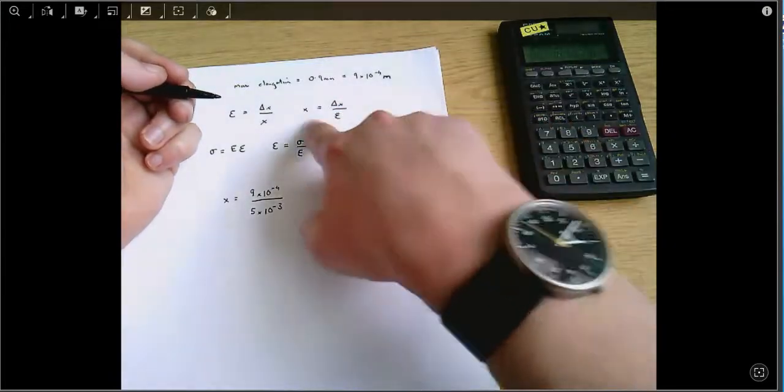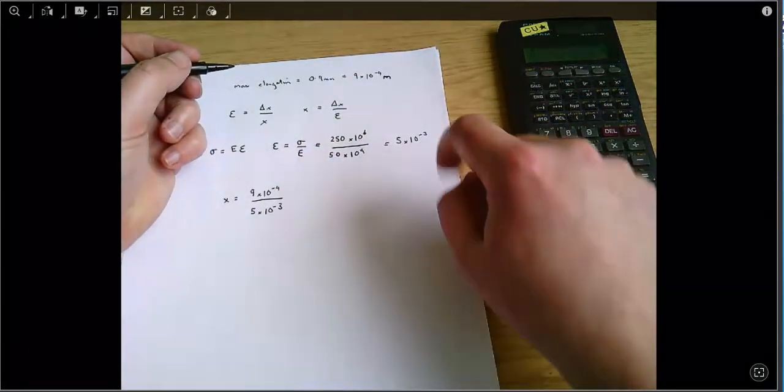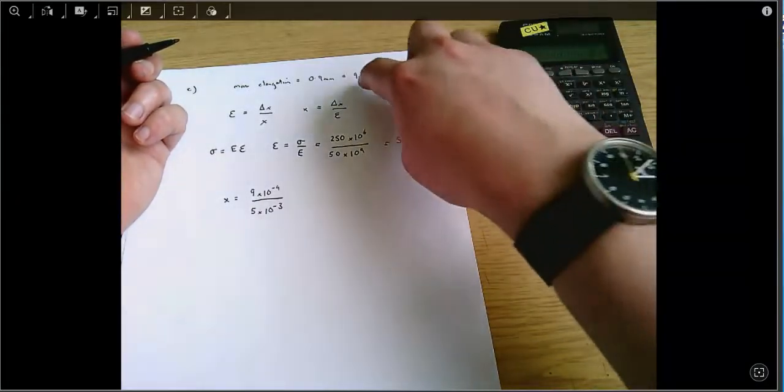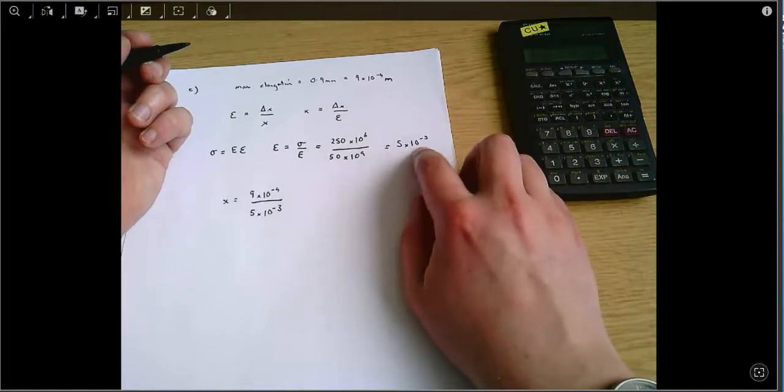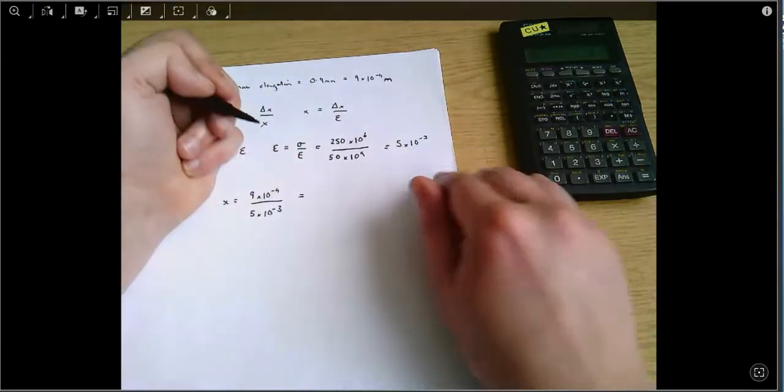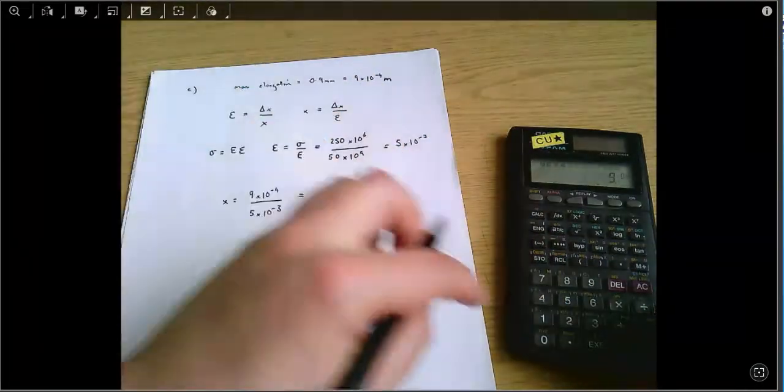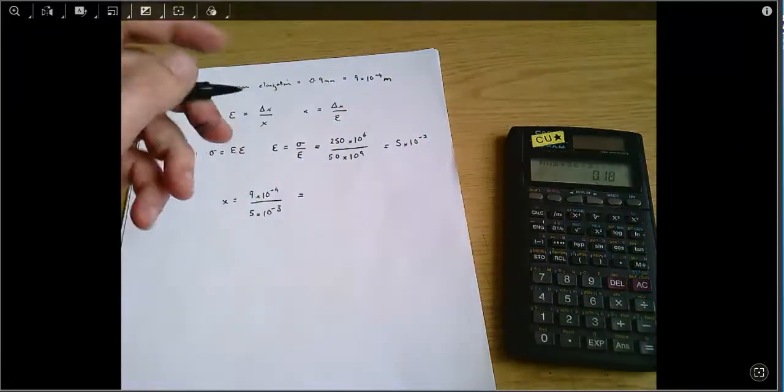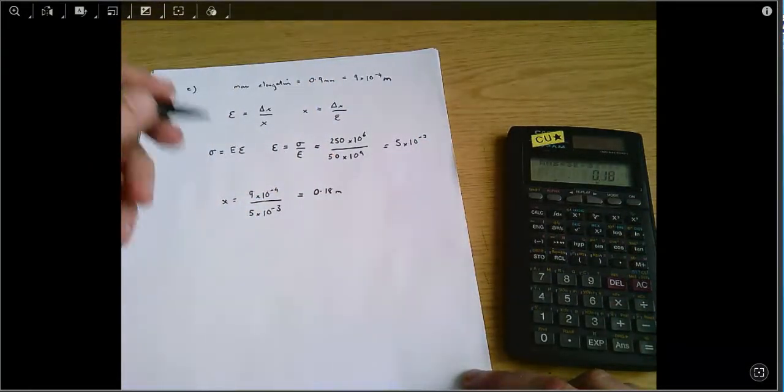I'm just using this equation here, which is the definition of strain rearranged. And I'm using these two numbers, the change in length that we're aiming for and the strain that we're aiming for, to tell us what the original length must have been. When I put that into my calculator, I get out 0.18 metres.